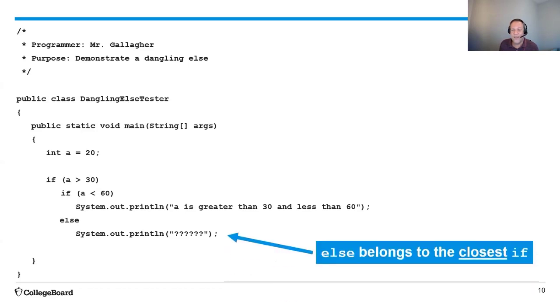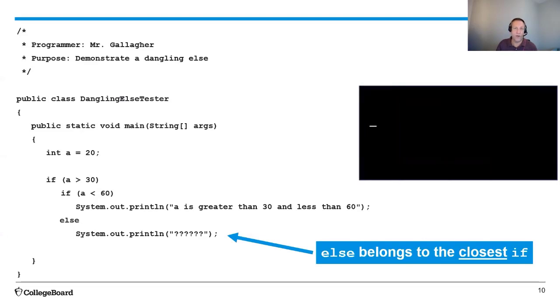Well, the answer is that the else always belongs to the closest if that doesn't have an else. So in this case, even though I had it tabbed over to line up with the first if, that else belongs to the second if. So when I run this code, since a is not greater than 30, nothing's going to get printed to the terminal window.